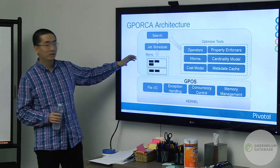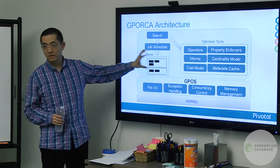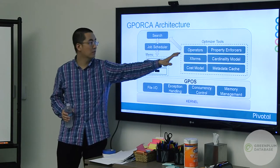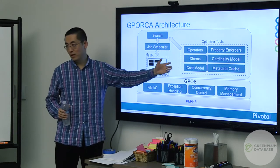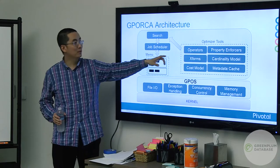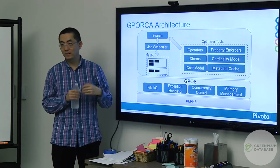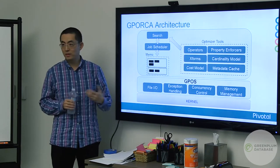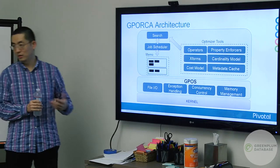There's a search framework to figure out what to do in this huge search space stored in memo. In terms of optimization, there are different logical and physical operators, transformation rules to make equivalent query plans, cost models to figure out which plan is better, property enforcers which handle how data is distributed and sorted in GreenPlum, an estimation model to determine row counts, and a metadata cache for data types and supported operators.